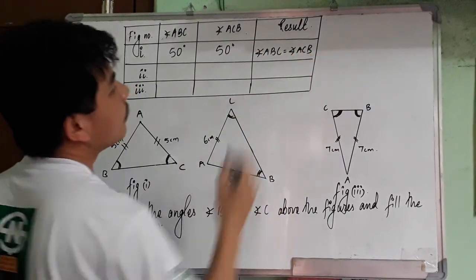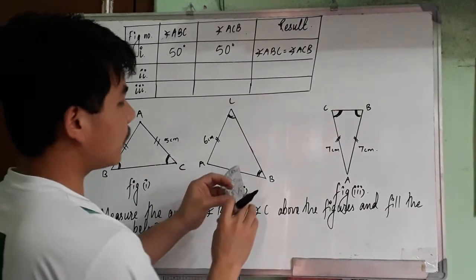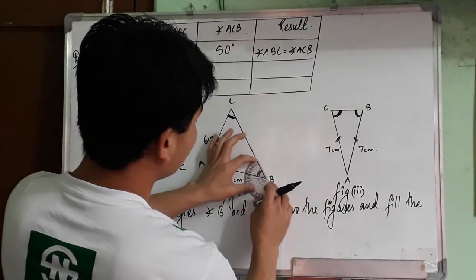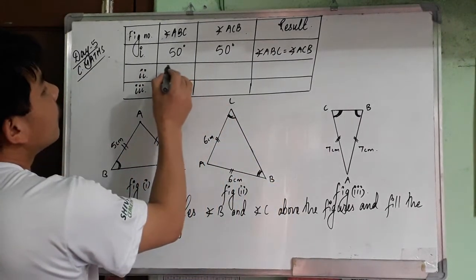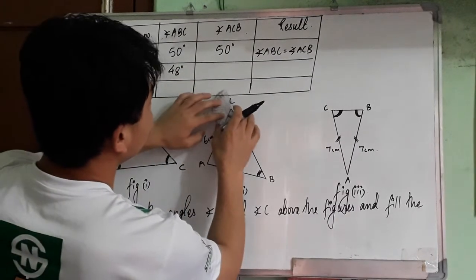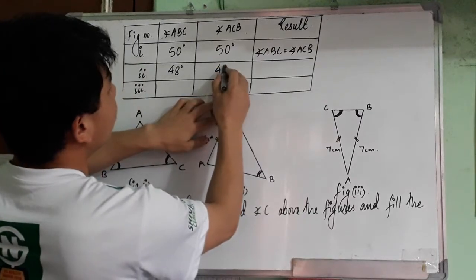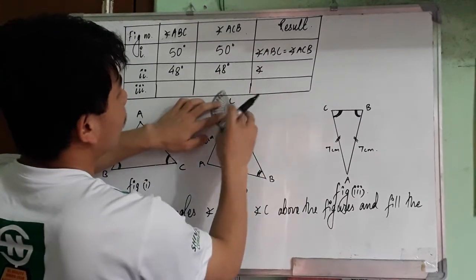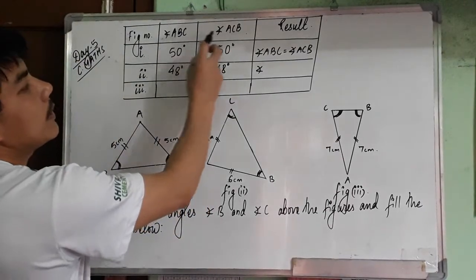In figure second, angle B and angle C, measure it. Angle B is 48 degrees, angle C is also 48 degrees. In figure second also, angle ABC and ACB are equal. Angle ABC equals angle ACB.